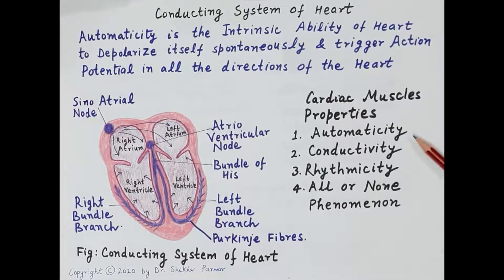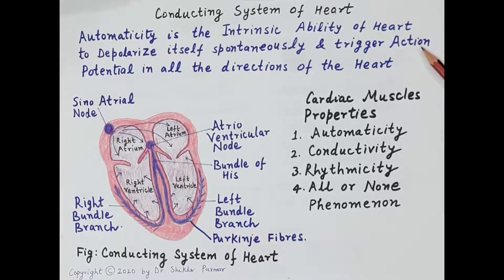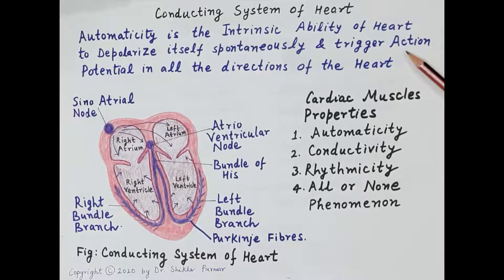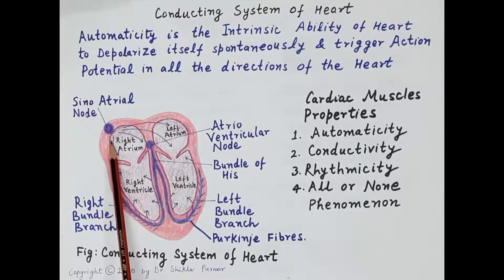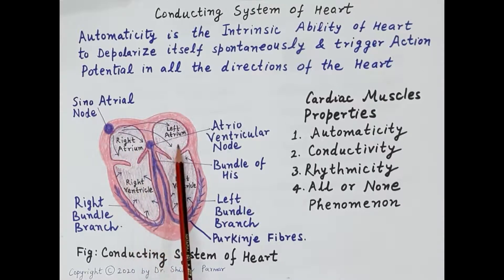Automaticity is the intrinsic or natural ability of the heart to depolarize itself spontaneously without any external stimulus and trigger an action potential. This action potential is triggered in all directions of the heart so that the pacemaker cells get depolarized, generate an impulse, and that impulse travels in all directions, causing the whole heart to contract as a unit.